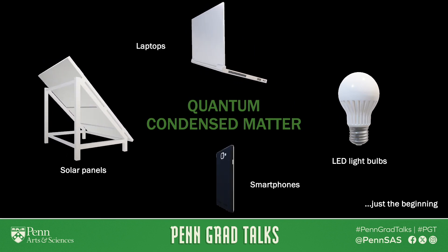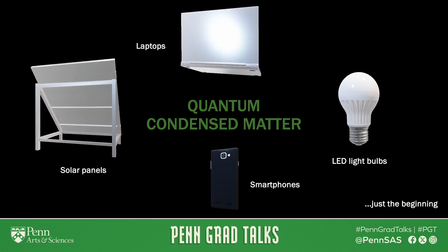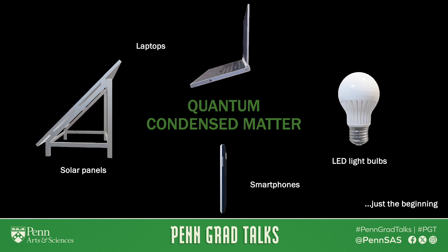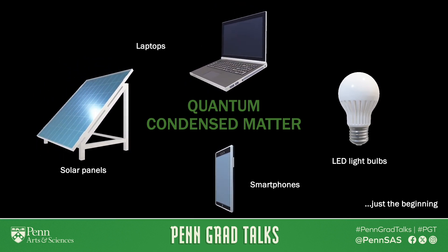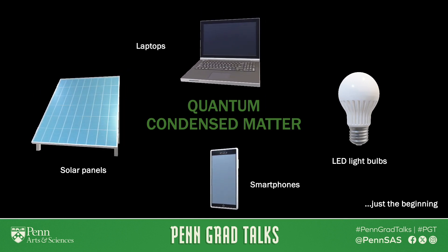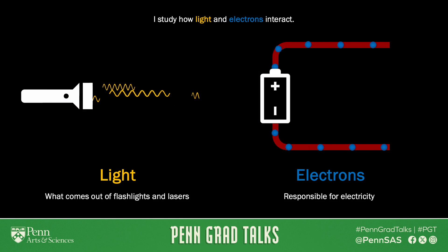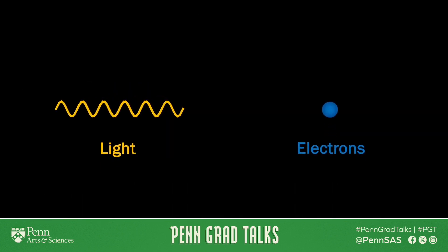Just think about the phone in your pocket and how it is an absolute marvel of science and technology. If you doodled your way through high school physics, you might think it's beyond you to try to understand how these work. But all it boils down to is two things: light and electrons. By light, I literally mean what comes out of flashlights and lasers. And by electrons, I mean the particles whose motion we call electricity. And that's it — this is literally everything I studied.